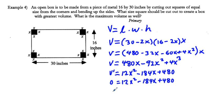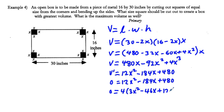We're going to solve this by factoring, starting with the greatest common factor. Dividing by 12 doesn't work evenly for 184, so we factor out a 4 from each term. That leaves us with 0 = 3x squared minus 46x plus 120. Dividing both sides by 4 gives us this simplified equation to factor.